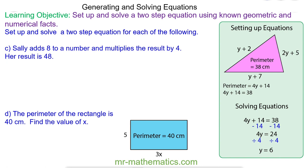For question C, Sally adds 8 to a number. She multiplies the result by 4. Her result is 48. So she adds 8 to a number. We don't know the value of that number so we can call it a letter. Let's call it C. It's okay if you drew a different letter. She adds 8 to the number so C add 8 and she multiplies the result of C add 8 by 4. So C add 8 multiplied by 4 is equal to 48.